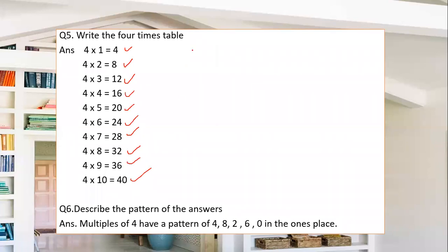Now describe the pattern of the answers. Between each two numbers you will get a difference of 4. For example: 8 minus 4 is 4, 12 minus 8 is 4, and 16 minus 12 is again 4.